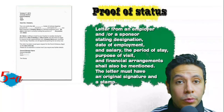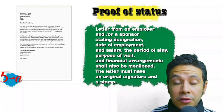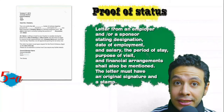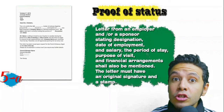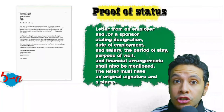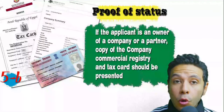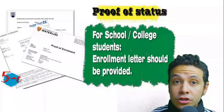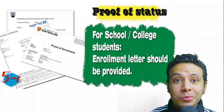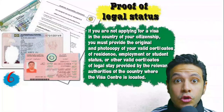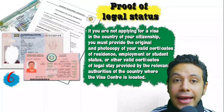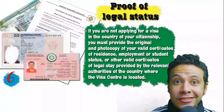In most visa application processes you will need to provide proof of status. If you are an employee, provide a letter from your employer or HR department mentioning your name, work details, salary, address, and contact numbers — with an original signature and stamp. If you own a business, present your commercial registry and tax card. If you are a student, provide an enrollment letter from your school or university. If applying from a country other than your own, provide a certificate of legal residence or a valid residence visa.